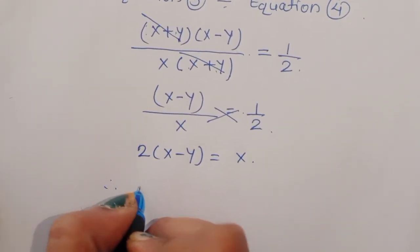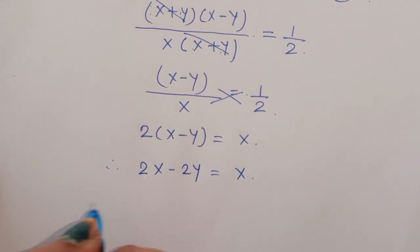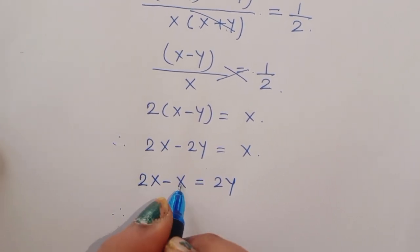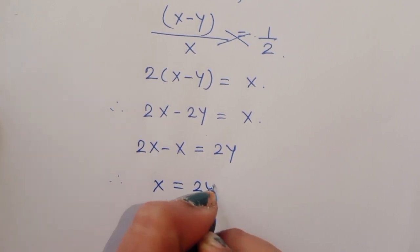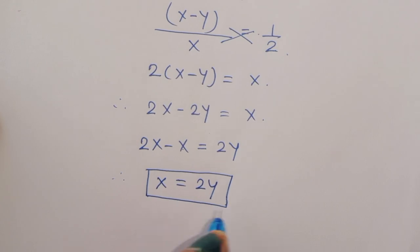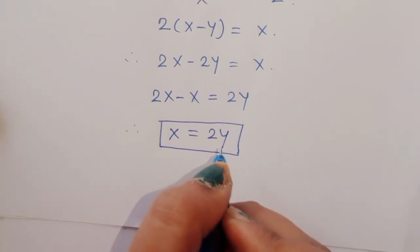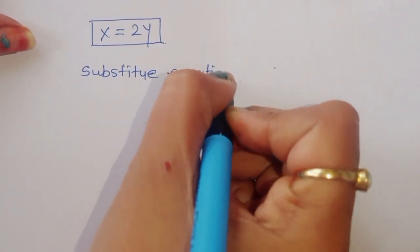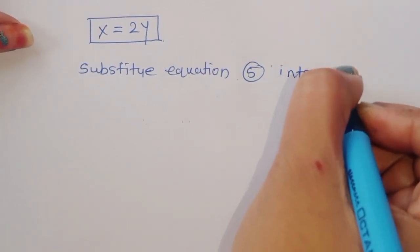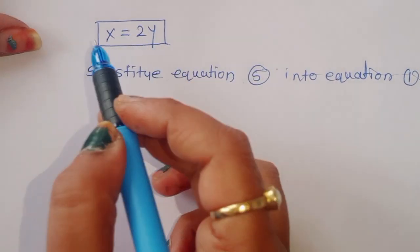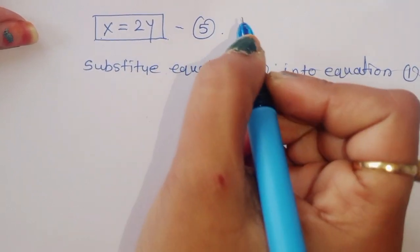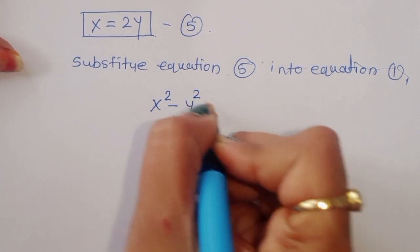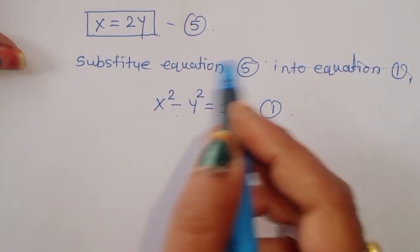Doing cross multiplication: 2(x minus y) equals x, so 2x minus 2y equals x. Therefore x equals 2y — this is equation 5. Now we substitute equation 5 into equation 1, which is x squared minus y squared equals 1.